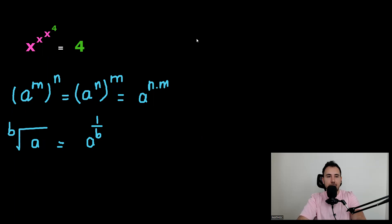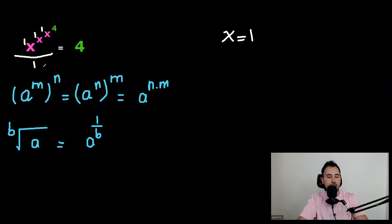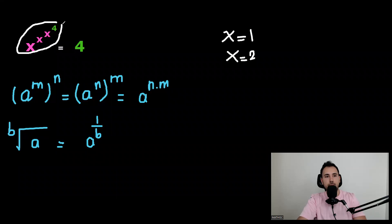So to start, if X is one, what happens to the left hand side? One to power of one to power of one to power of four. All of this will be one. However, what happens if X is two? Well, what happens to this side? It would be two to power of two to power of two to power of four.